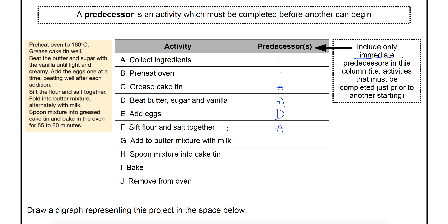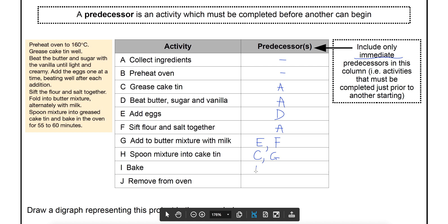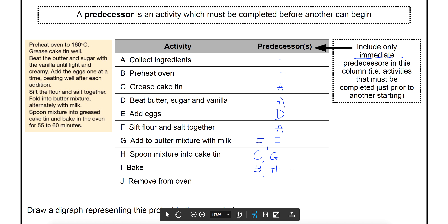For G, we're adding those two mixtures together, so we need the first mixture with the eggs done (E) and the sifting of the flour and salt done (F). So E and F are immediate predecessors of G. Once that's done, we're spooning the mixture into the cake tin (H), so you need G done, but you also need the cake tin to be greased, so C has to be done as well — C and G are predecessors of H. Baking (I) requires the oven to have been preheated, so B is a predecessor, and the mixture needs to be in the tin, so H is also a predecessor.